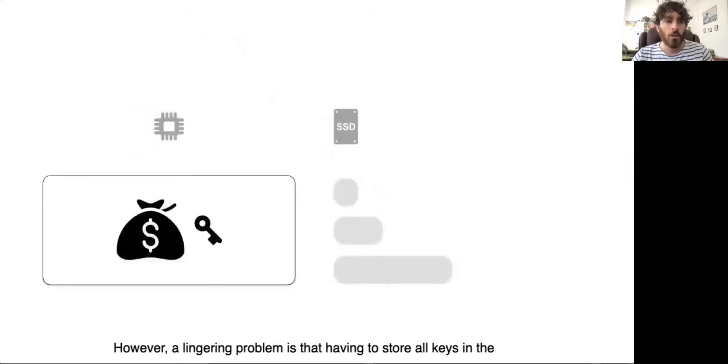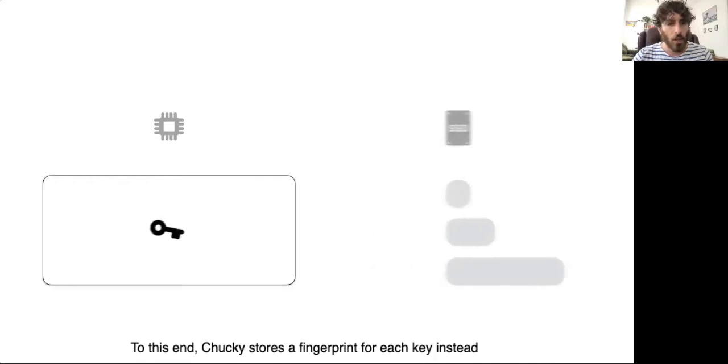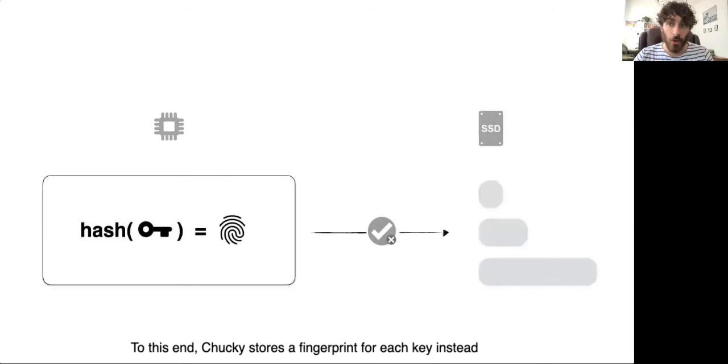However, a lingering problem is that having to store all keys in the hash table can amount to a large performance overhead. To this end, Chucky stores a fingerprint for each key instead of the key itself, where a fingerprint is a hash digest obtained by hashing a key. Storing fingerprints, however, can lead to false positives with a probability that depends on the fingerprint size.